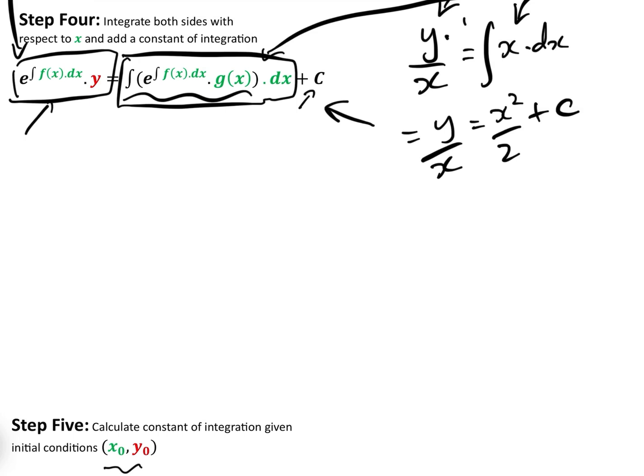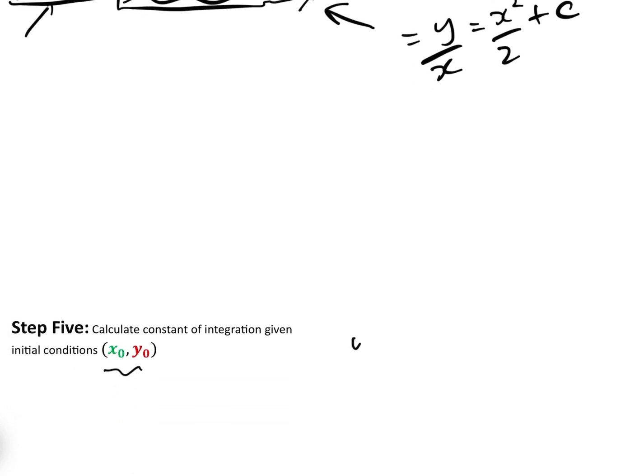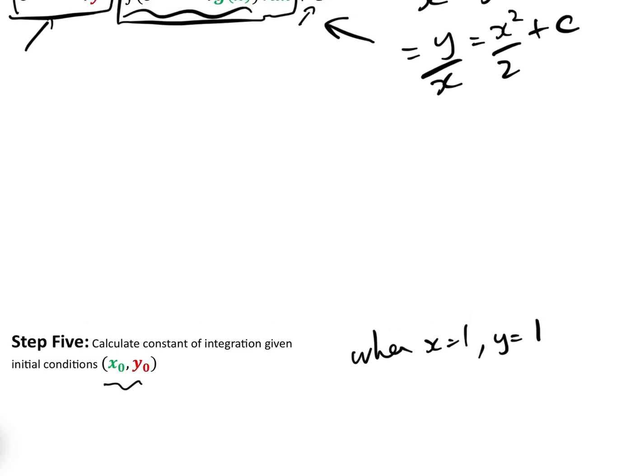Now step five is that we have here, let's step five. So, when x equals 1, y equals 1. So, all we need to do is put that into there. So, we have y over x equals x squared over 2, add c.